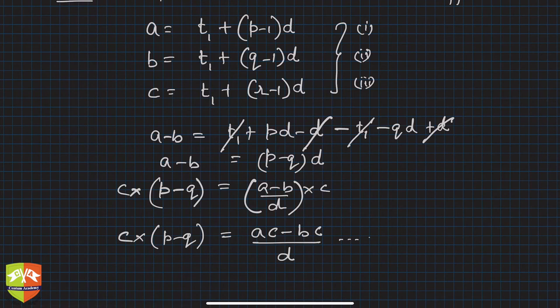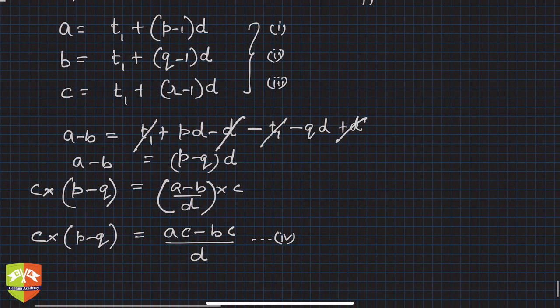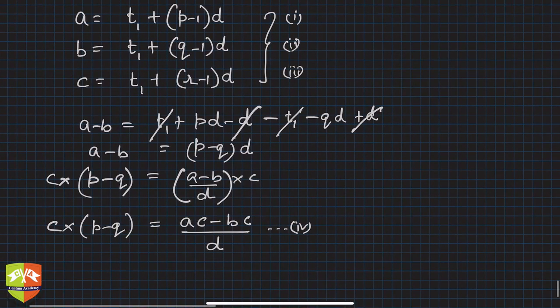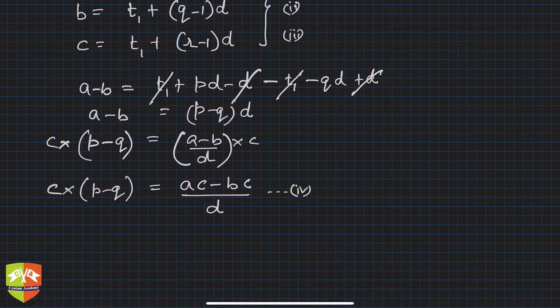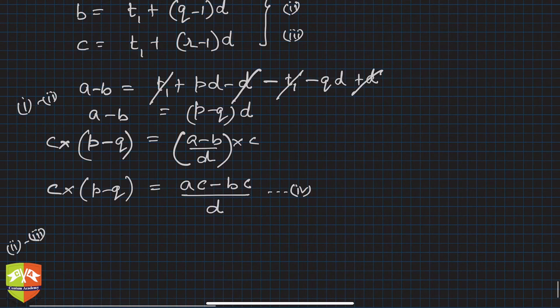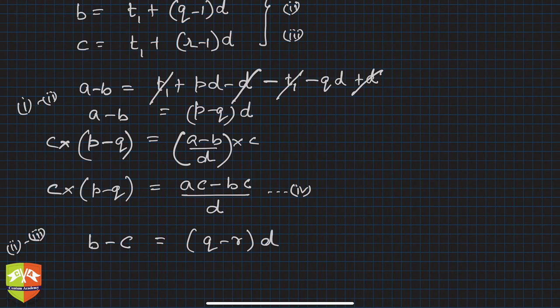Now let's do 2 minus 3. So this was simply 1 minus 2. Let's do 2 minus 3. So 2 minus 3 will give you what? Again, I am not going to repeat the same process. You'll get b-c = (q-r)d, just like here.